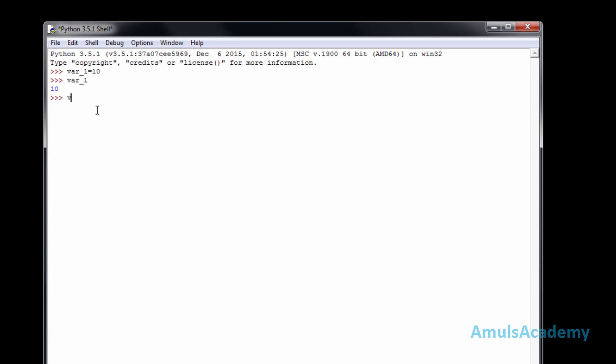Now, in Python, a variable can hold any kind of value. For example, here the variable is holding an integer value. Now I will give var = 4.5—it is a floating point value, and it is valid. I will enter a string—it is also valid.